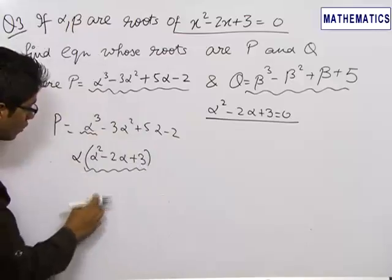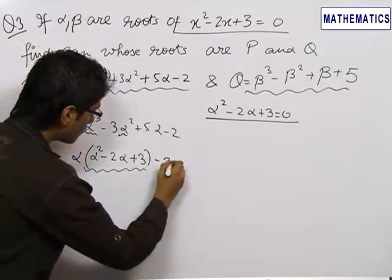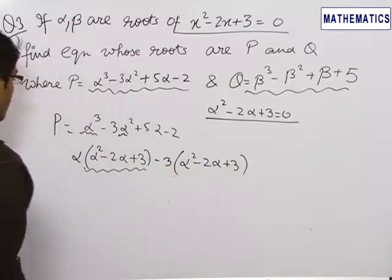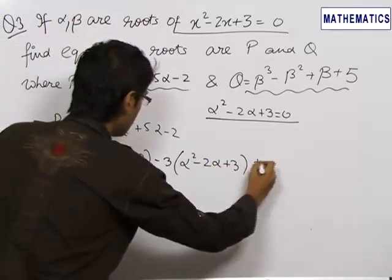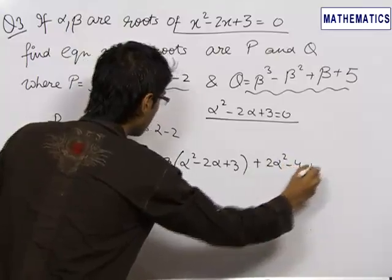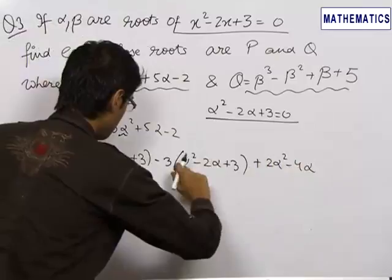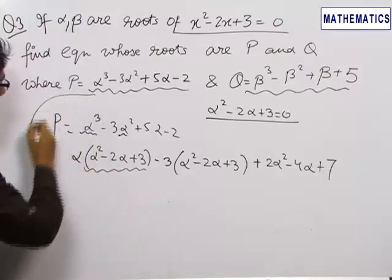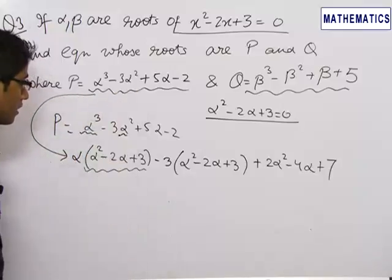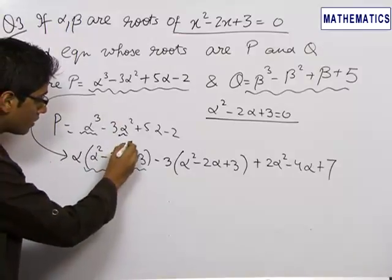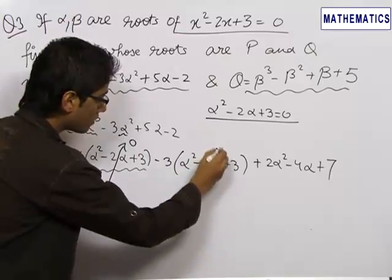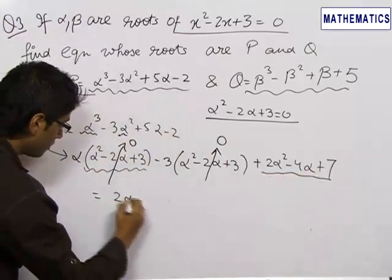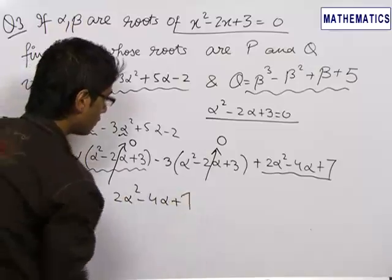We write the cubic term as α(α² - 2α + 3), then write the -3α² term as -3(α² - 2α + 3), and collect the remaining terms which are 2α² - 4α + 7. Since α² - 2α + 3 = 0 and the second grouped factor is also 0, we are left with 2α² - 4α + 7.